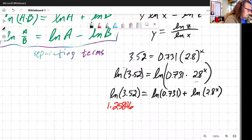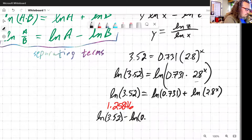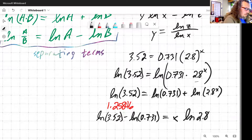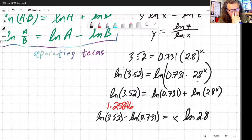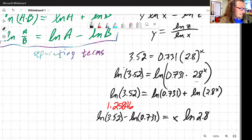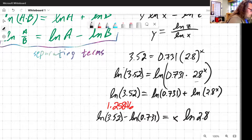All right, let's see what else we need to do. I can expand this out. Let me move a few things around and expand them at the same time. So natural log of 3.52, I'm going to move this term over, minus natural log of 0.731 is equal to, and let me pull that exponent out, x times natural log of 2.8.